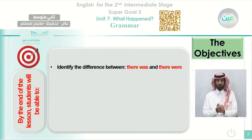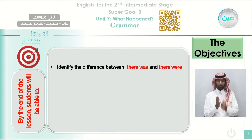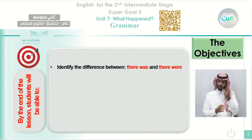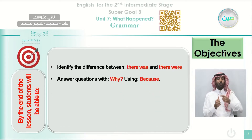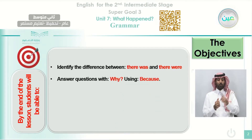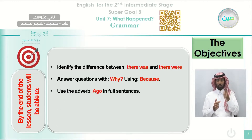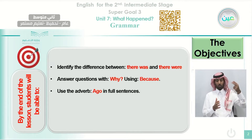What are the objectives? Objectives are the things that we are planning to achieve at the end of this class, insha'Allah. At the end of the class, students will be able to identify the difference between 'there was' and 'there were'. Also, the students will be able to answer questions with 'why' using 'because'. Next, the students will be able to use the adverb 'ago' in full sentences.